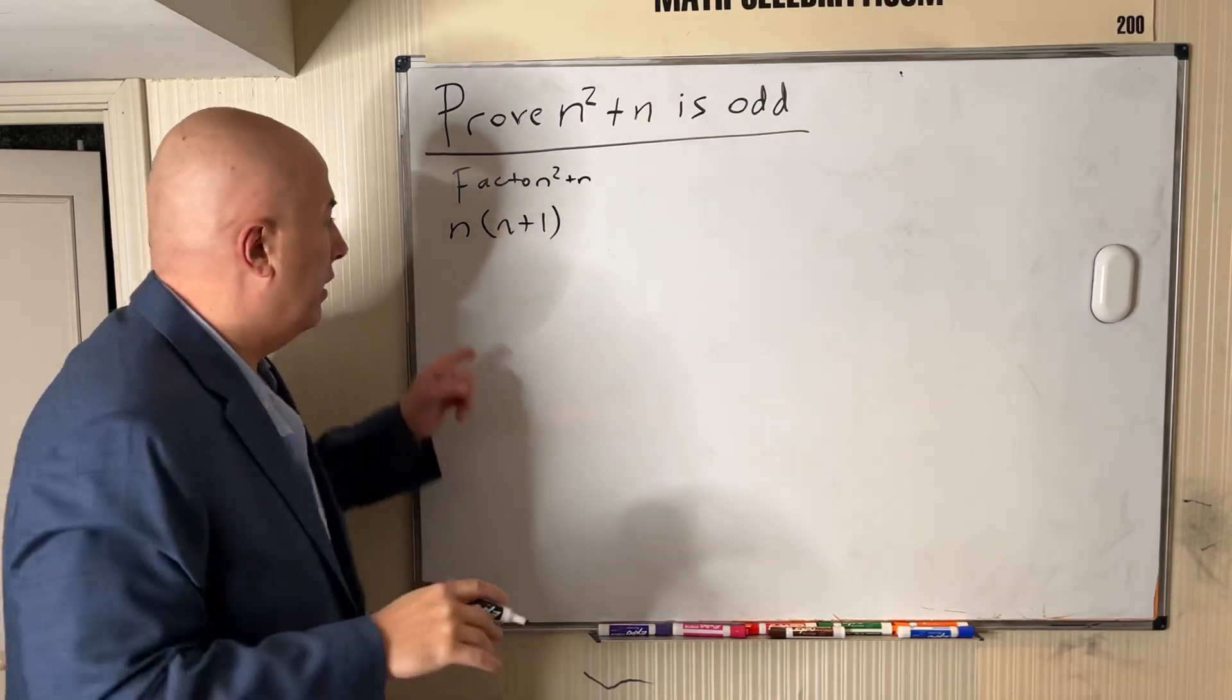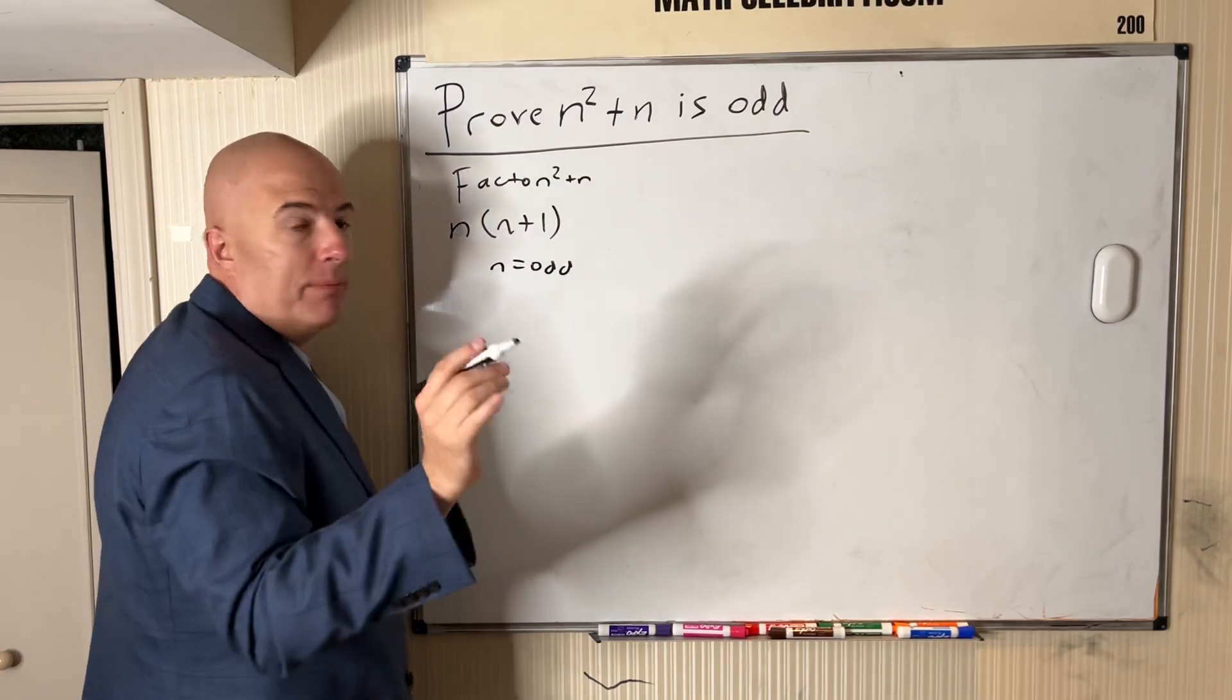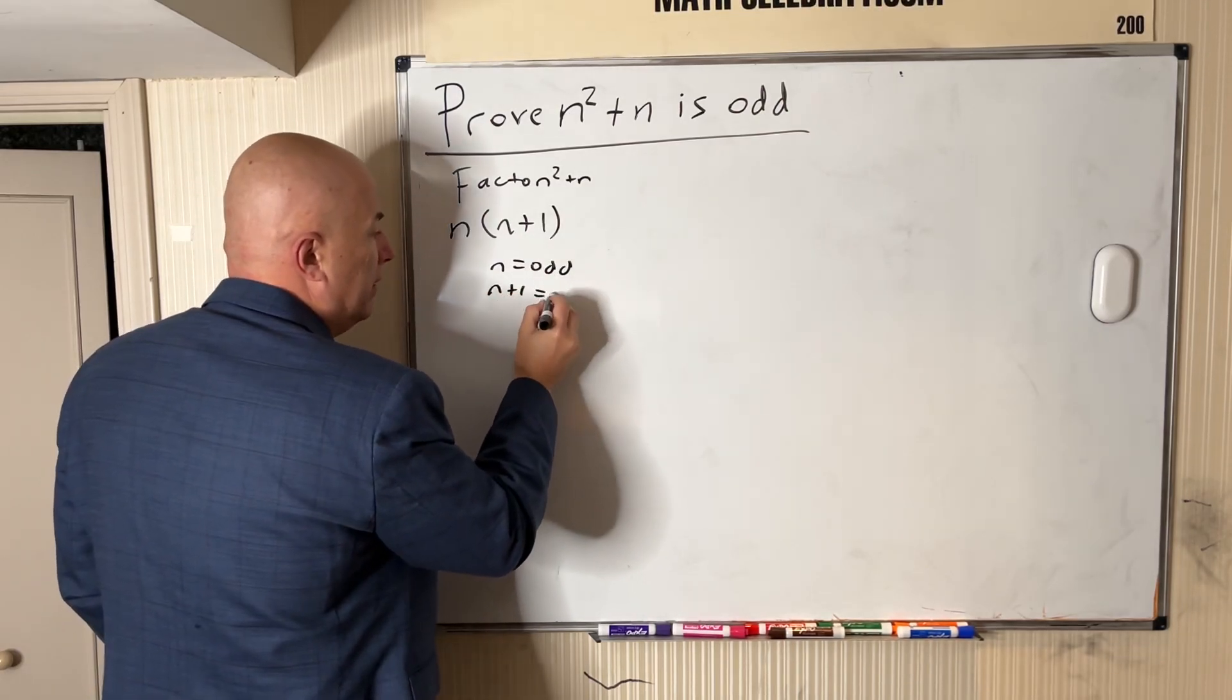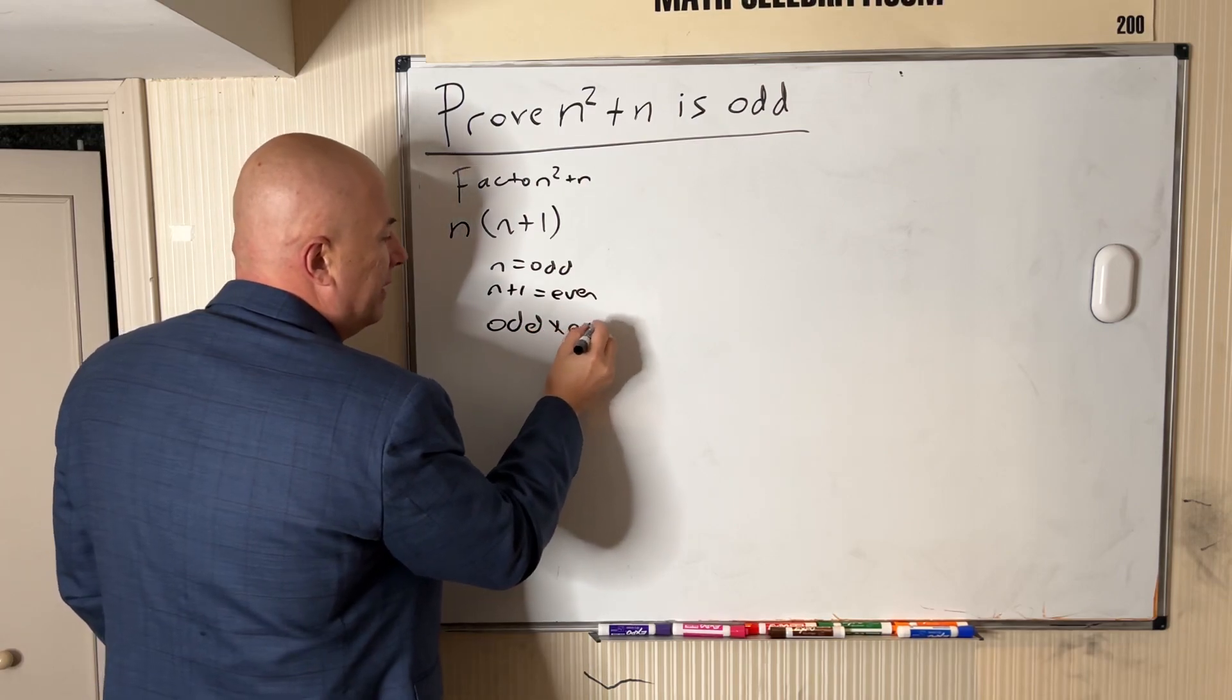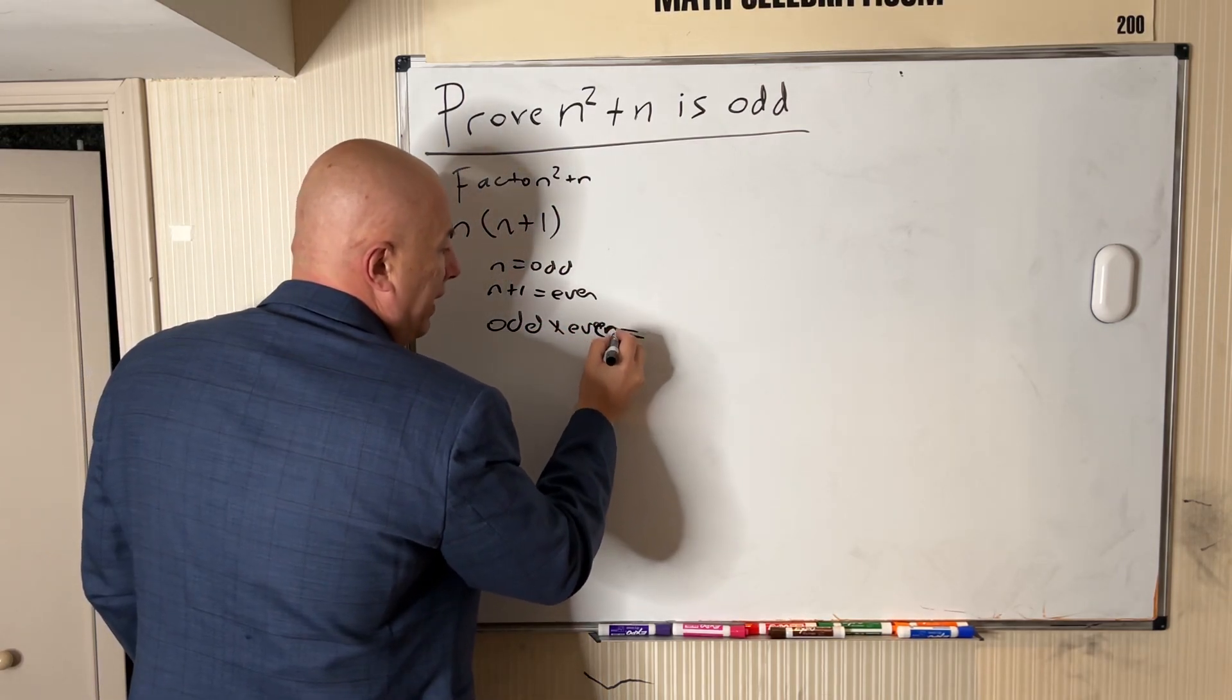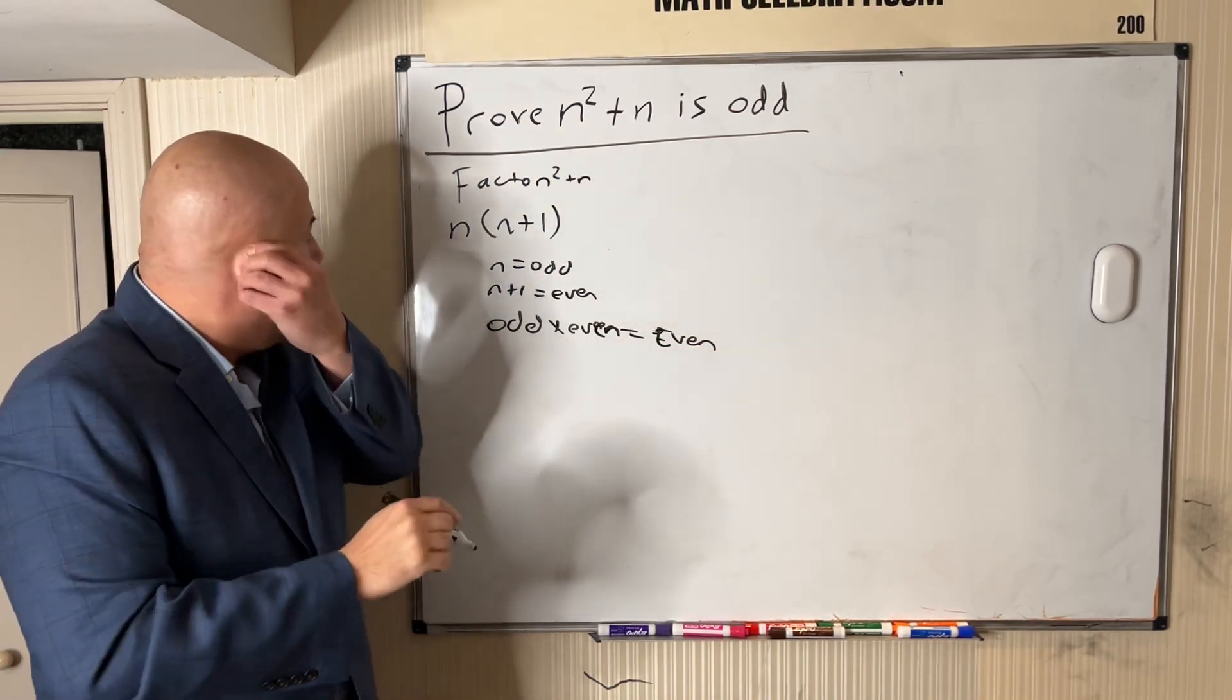Here's where we make the jump to the shortcut. First, we assume what if n is odd? That means that n plus one is even, and the product of an odd times an even is always even.